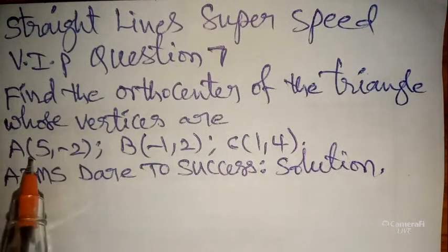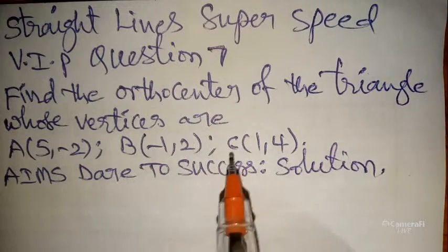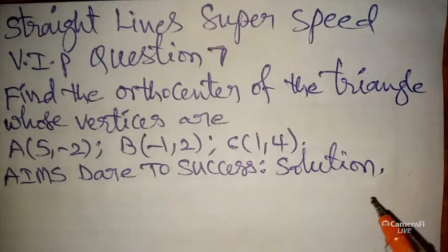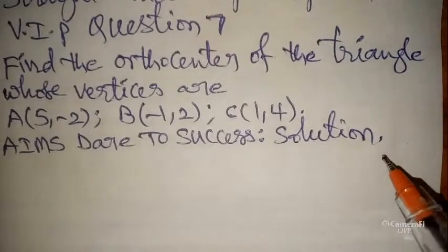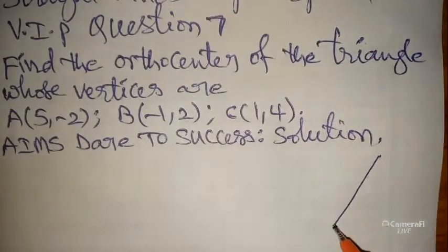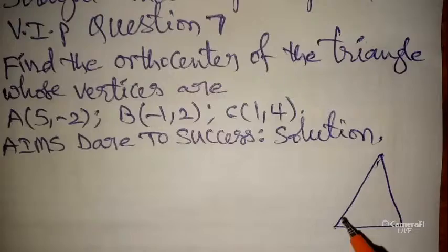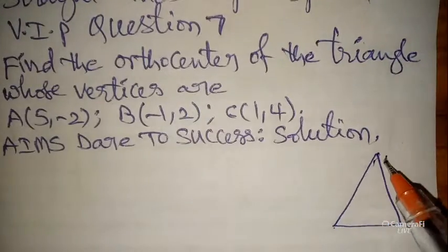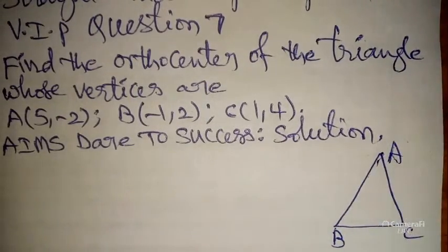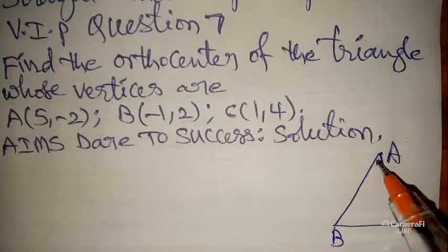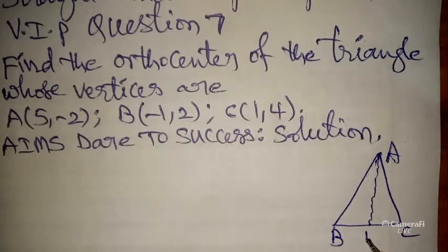Now I want to start the solution. Find the orthocenter of the triangle whose vertices are A(5, -2), B(-1, 2), and C(1, 4). Using these three points we want to form triangle ABC.